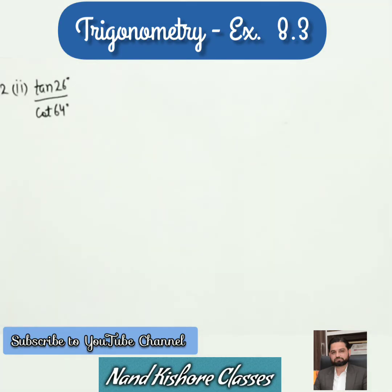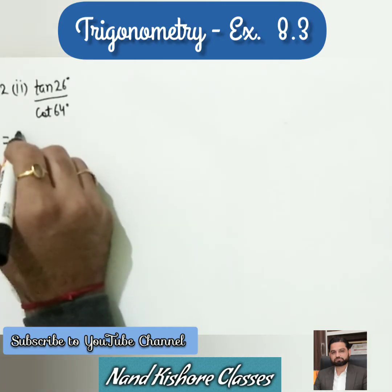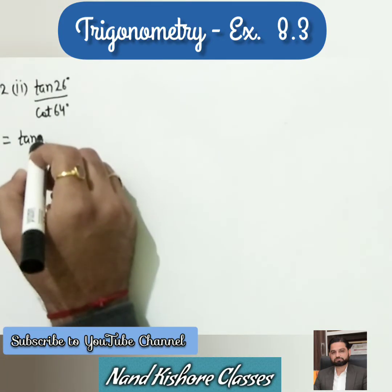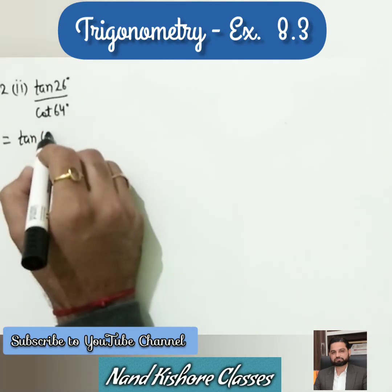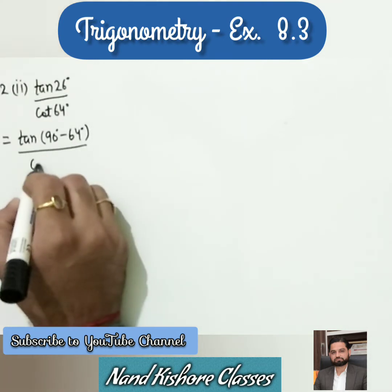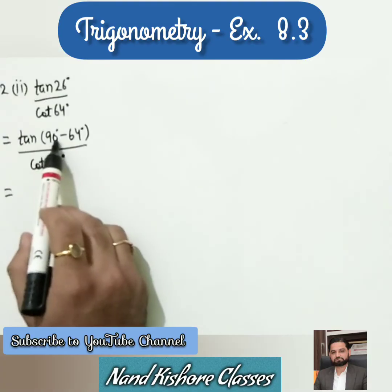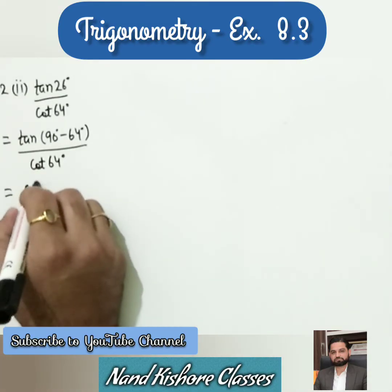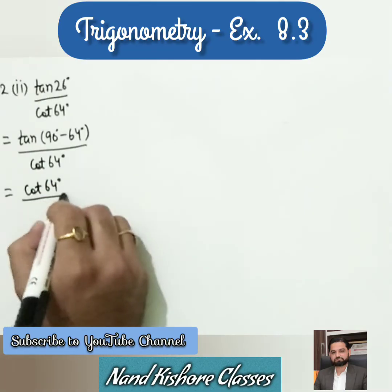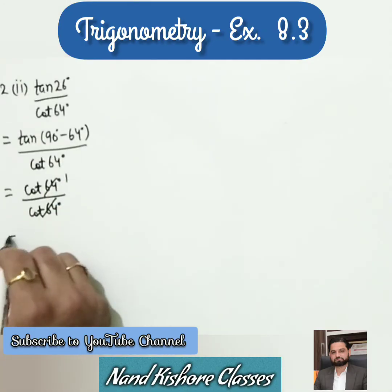Second part: tan 26° over cot 64°. Since 64 + 26 = 90, the same steps apply. Write 26 as 90 minus 64, giving tan(90 - 64). Using the formula tan(90 - θ) = cot θ, the numerator becomes cot 64, which cancels with the denominator cot 64. Answer is 1.